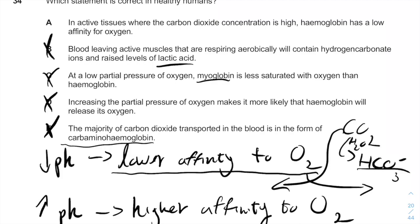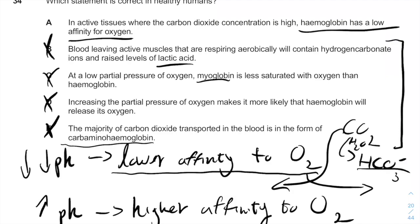So the correct answer is A: in active tissue where carbon dioxide concentration is high, hemoglobin has a low affinity for oxygen. Even without knowing the other options, you should know that in active tissues with more carbon dioxide, you will have a lower pH, and therefore lower affinity of hemoglobin for oxygen. And that's the answer.